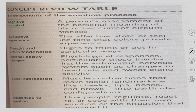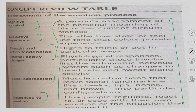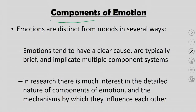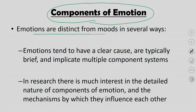Each process — from cognitive appraisal to subjective experience, to thought and action tendencies, to facial expressions, and response to emotion — has been explained in detail and should be reviewed in the concept review table. Now, the components of emotion: emotions are distinct from moods in several ways.